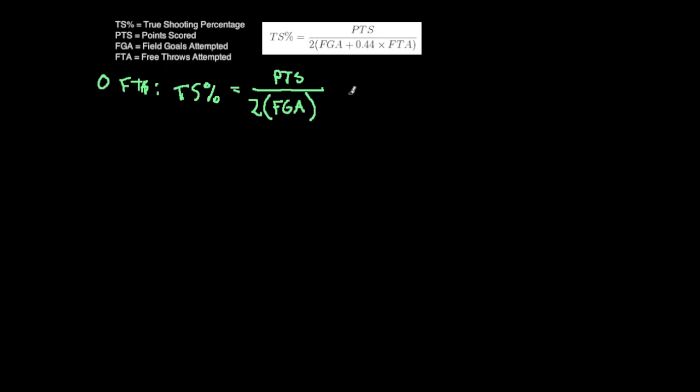First case, what if someone only made twos? Let's say someone went 10 of 10 on two pointers, giving them 20 points. Their true shooting percentage would equal 20 points divided by 2 times 10 field goals attempted, so that's 20 over 20, which equals 1, or 100%.